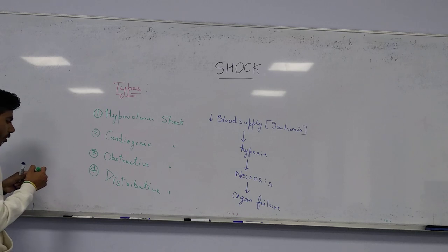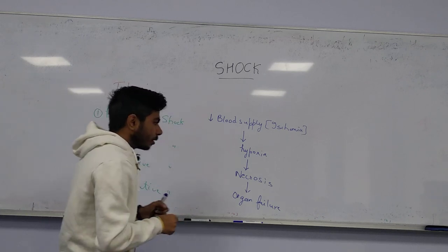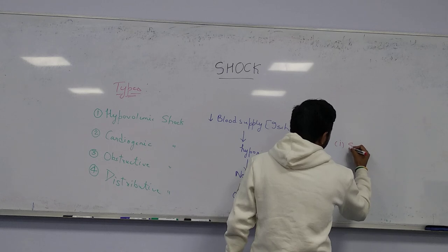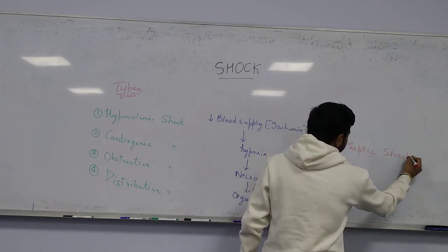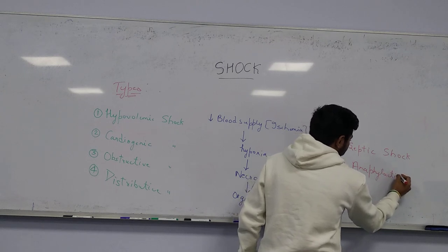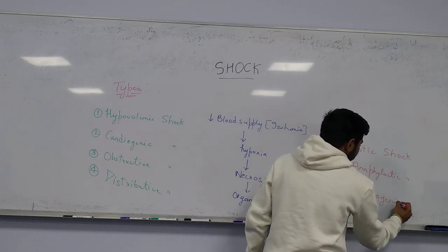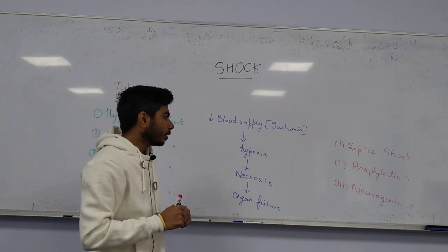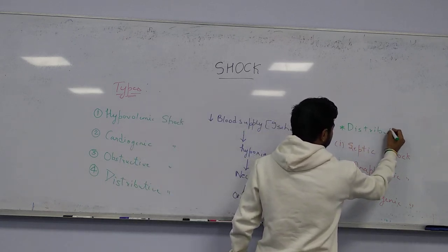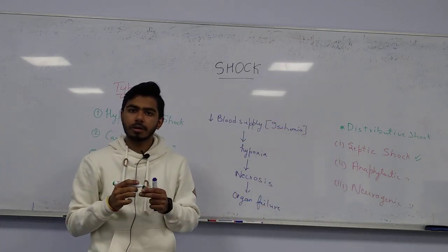Distributive shock is further divided into three categories: septic shock, anaphylactic shock, and neurogenic shock. Among these, septic shock is very dangerous. Septic refers to sepsis, and the condition is mainly caused by gram-negative bacteria.